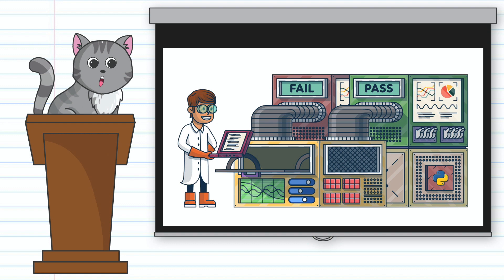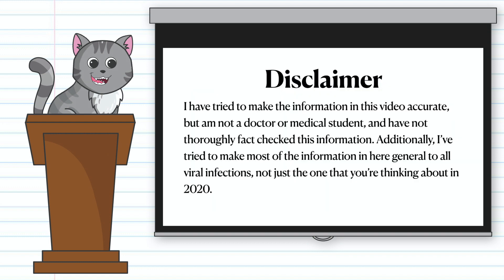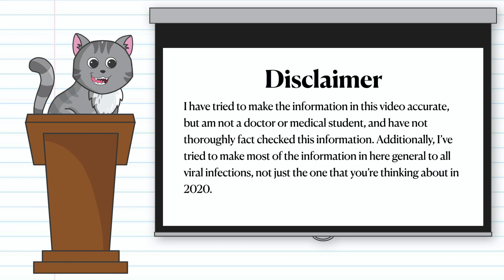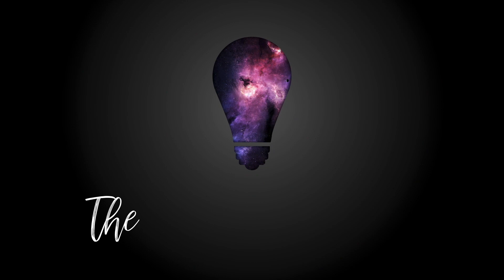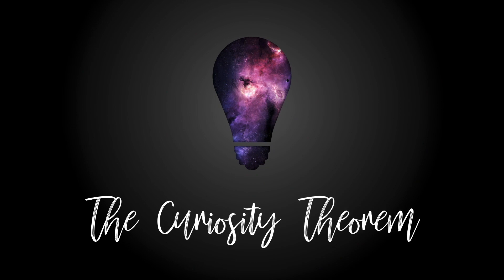While most of us now understand how important this is given our scenario, not many of us actually know how the test works. The science behind testing for the presence of a viral infection in the human body is truly fascinating and massively pertinent to current events. So grab your mask, get some sanitizer, and let's get into it. In this video, we're going to look at a plethora of methods to test people for viral infections, starting with PCR.